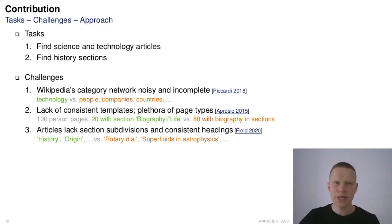Second, Wikipedia lacks consistent templates for articles, resulting in numerous different page types. An evaluation of 100 articles about people yielded 20 pages with a designated section, biography or life, but also 80 with a person's biography split across sections.